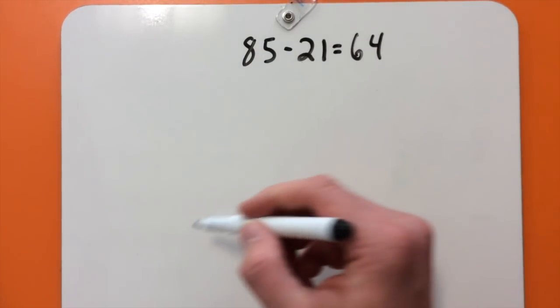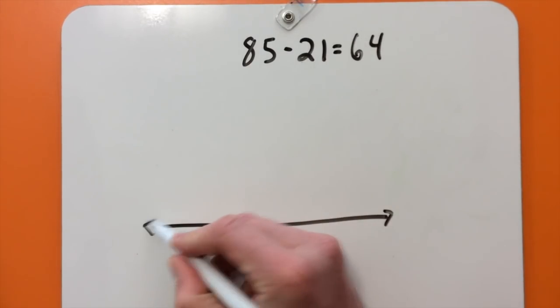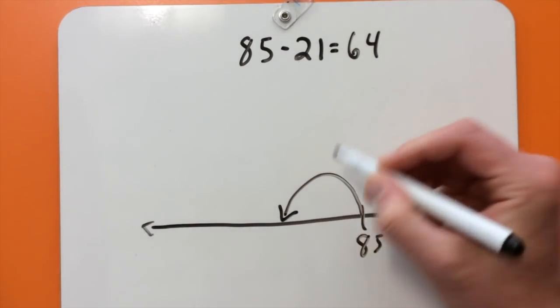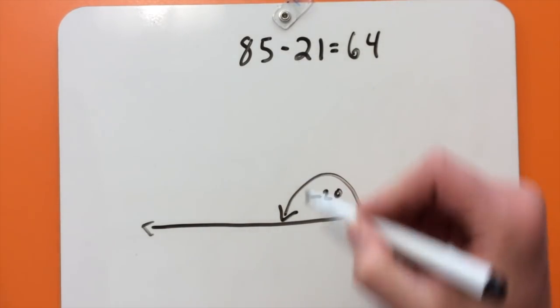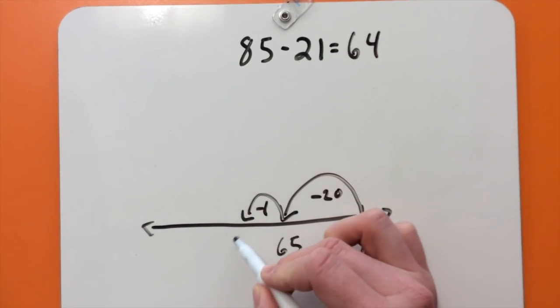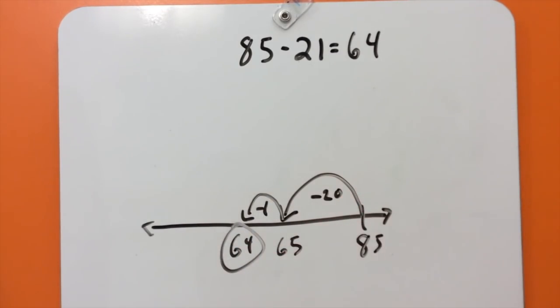A third way of doing this problem would be to draw a number line. On it, I can start with 85. And I'm first going to take away my 20, which gives me 65. And then I'm going to take away one more, which gives me 64.